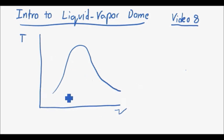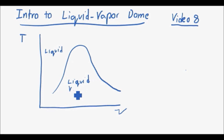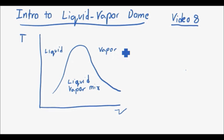If you look at this plot, on the left-hand side of the dome you have liquid. Inside the dome region you have a liquid-vapor mixture, and then over on the right-hand side you have vapor. What this dome allows us to determine — plotted here with different values for water — is where you would be based on your properties: temperature, pressure, specific volume, etc.